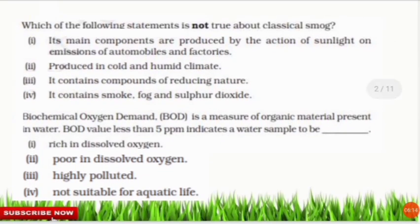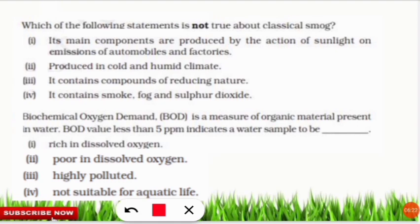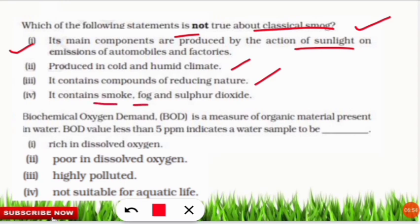The next question: which statement is not true about classical smog? The correct answer is option one — that its main components are produced by the action of sunlight. That describes photochemical smog, which involves PAN, oxides of nitrogen, ozone, and sunlight. The true statements about classical smog are: it is produced in cold and humid climate, it contains compounds of reducing nature, and it contains smoke, fog, and sulfur dioxide.